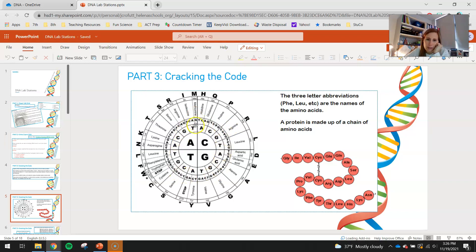On the inside, you guys will see these little A's, T's, C's, and G's. Those are the little parts of our DNA. So basically, we can take these and kind of look at our code. If we have three nucleotides or three nitrogen bases, A's, T's, C's, and G's, what protein does that give us? What amino acid does that give us? The three-letter abbreviations are the names of the amino acids. A protein is made up of a chain of amino acids.